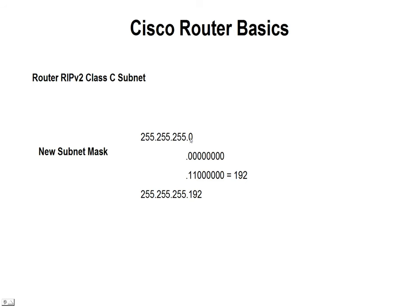Here we're going to have a new subnet mask that we're going to create. By taking two of those bits in that last octet — the two high order bits and setting them high — that bit there would be 128, the bit next to it would be 64. If we add those two together, we get 192. So our new subnet mask that we're going to be creating here would be 255.255.255.192. That's showing that we've taken two bits from this last octet and added them to our network range. By taking two bits, that's going to give us four combinations — our four networks.